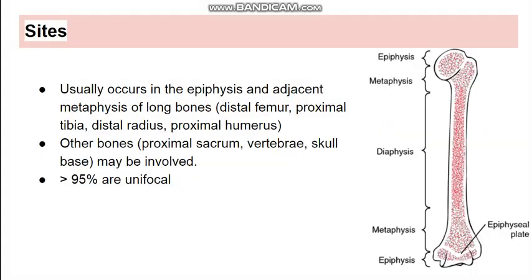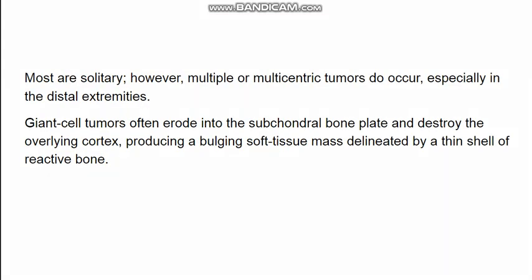The sites affected by this tumor are mostly the epiphysis and the adjacent metaphysis of long bones, such as the distal femur, proximal tibia (the knee joint), distal radius, and proximal humerus. Because it affects the knee joint, the presenting feature can sometimes be arthritis. Any bone of the body can be involved. 95% of tumors are unifocal, but multifocal or multicentric tumors can also present.